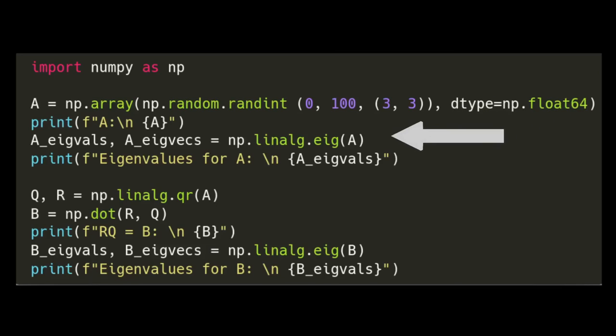We are going to generate a random 3x3 A matrix with values between 0 and 100. We're going to use the numpy linalg eig function to compute the eigenvalues and eigenvectors for that A matrix. Then we are going to compute a QR matrix decomposition of that original randomly generated A matrix, and then compute a similar matrix with our R and Q matrices computing the product RQ. Then we will use the same numpy linalg eig function on that similar matrix to compute the eigenvalues and eigenvectors.